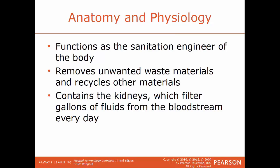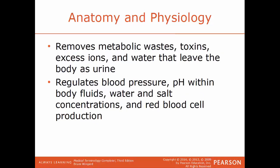Now we'll talk about some basic anatomy and physiology of the system. The urinary system functions as the sanitation engineer of the body — it helps remove unwanted waste materials and also recycles needed materials. The primary component of the urinary system are the kidneys, which filter gallons of fluid from the bloodstream every day. The system is responsible for removing metabolic waste, toxins, excess ions, and water that leave the body as urine. The system also helps regulate blood pressure, the pH within body fluids, and the concentrations of water and salt within the body, as well as the production of red blood cells.